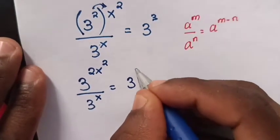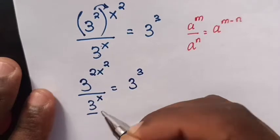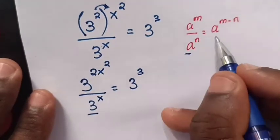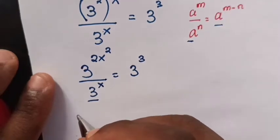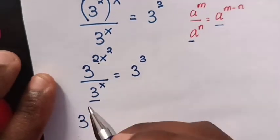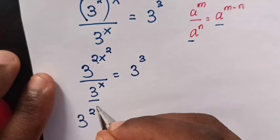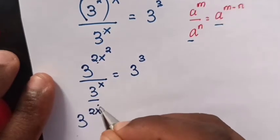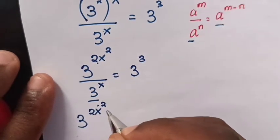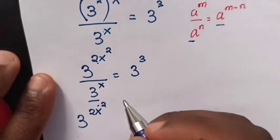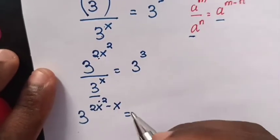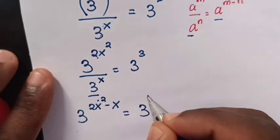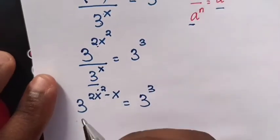Now to the left side of the equation, we apply the exponential rule. So it will be 3 power 2x square minus x equals 3 power 3.